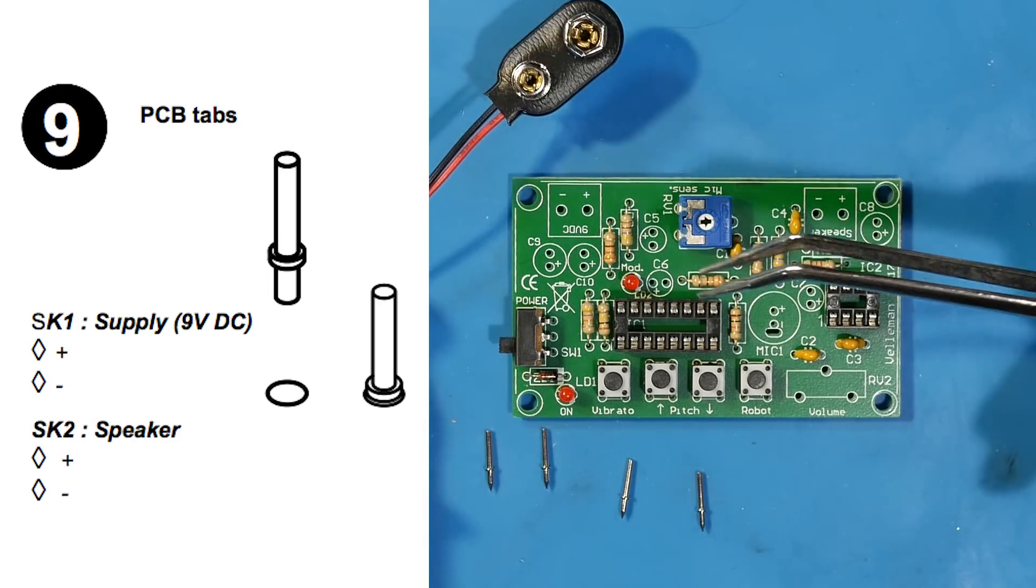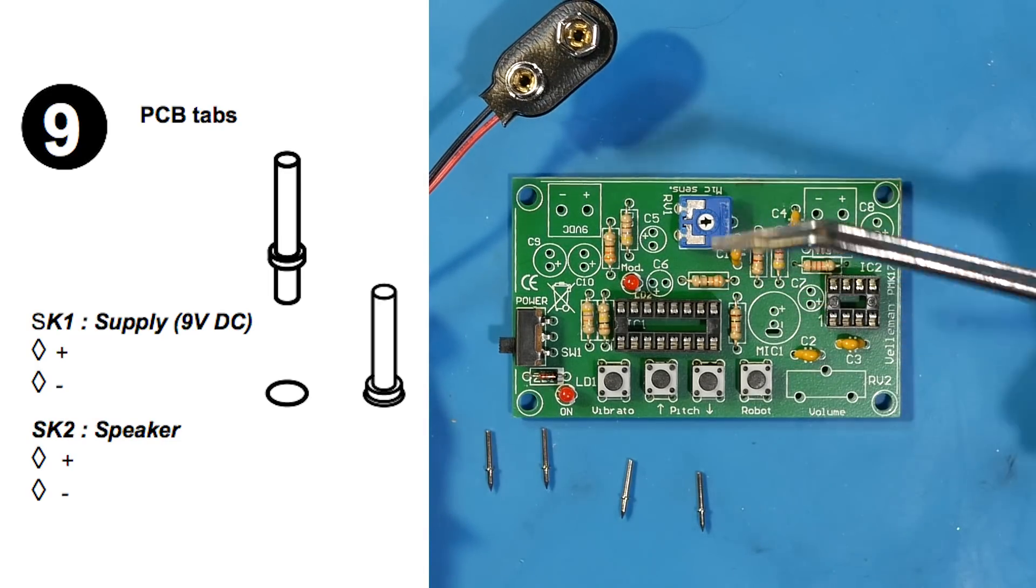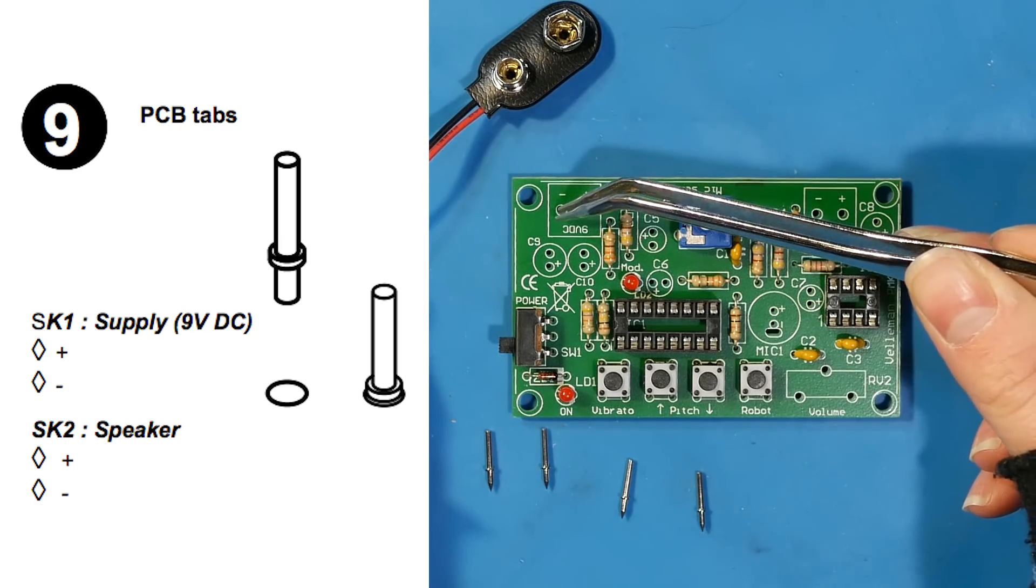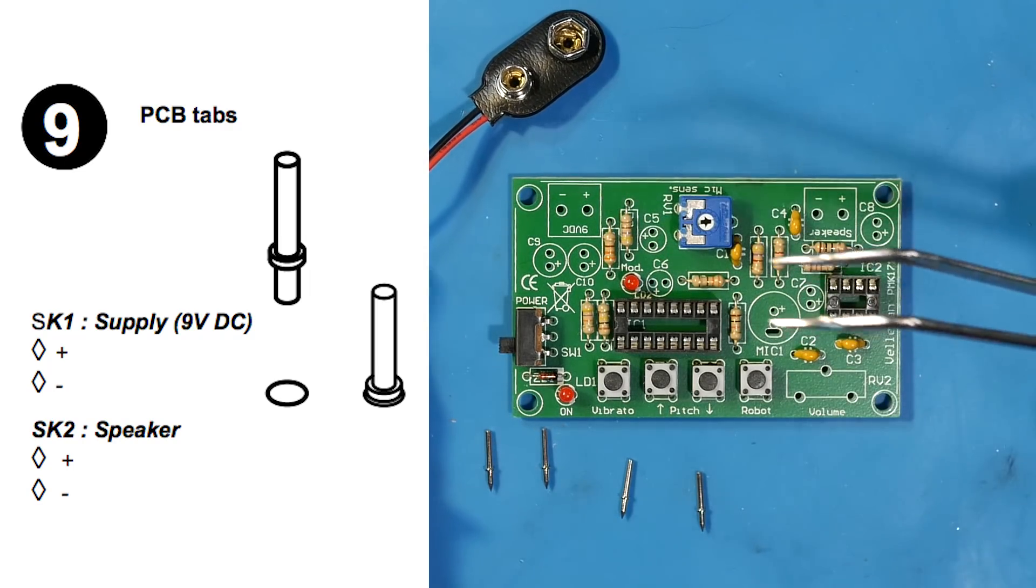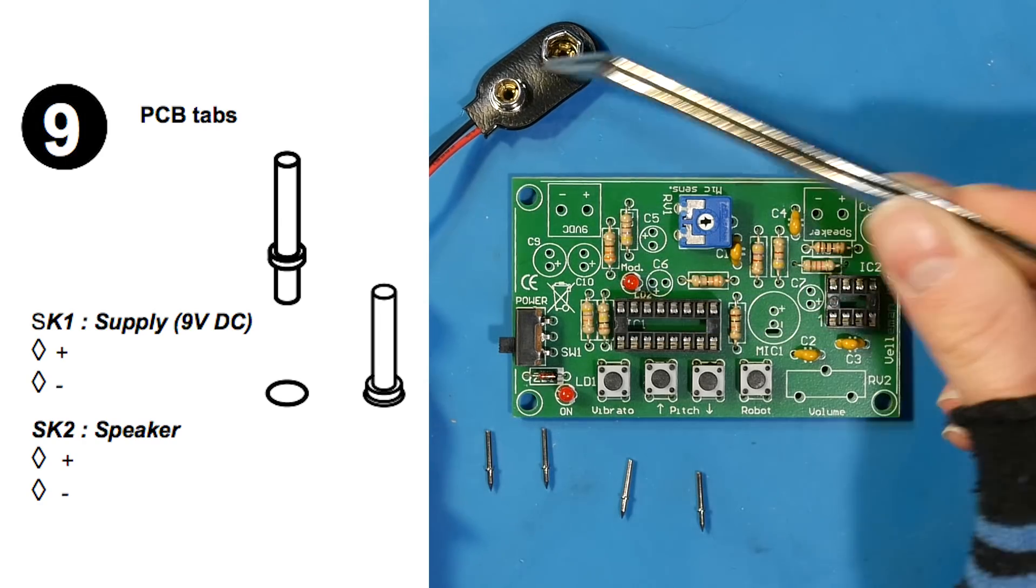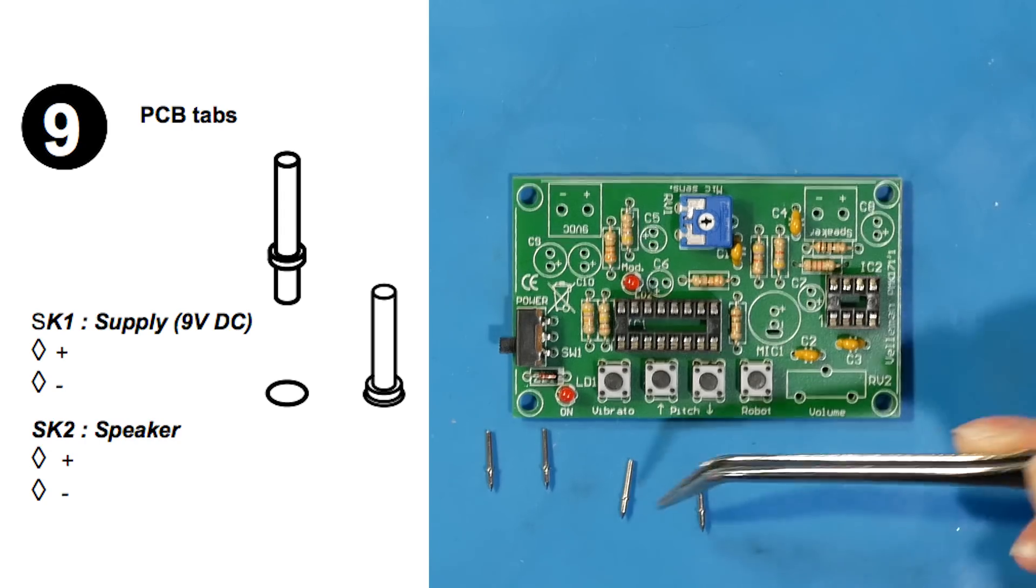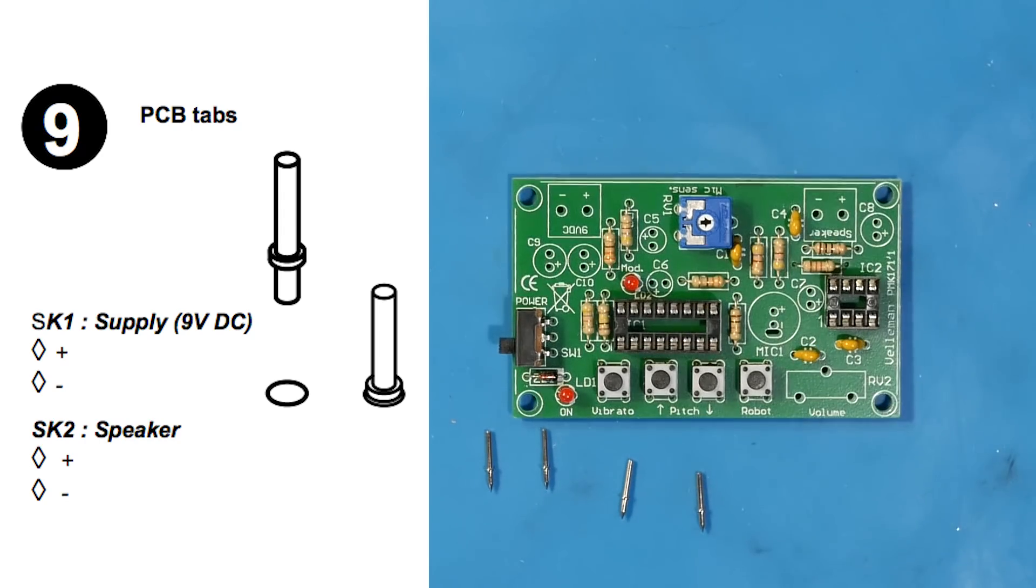Step nine is for our inputs and outputs. This kit comes with a 9-volt battery snap, but it also comes with two pins that you can plug in to where the power input is going to be. I'm going to end up using a power supply rather than a 9-volt battery, so I'm going to put the two pins in. Again, it doesn't come with a speaker, so you can solder in the two pins to connect them later.